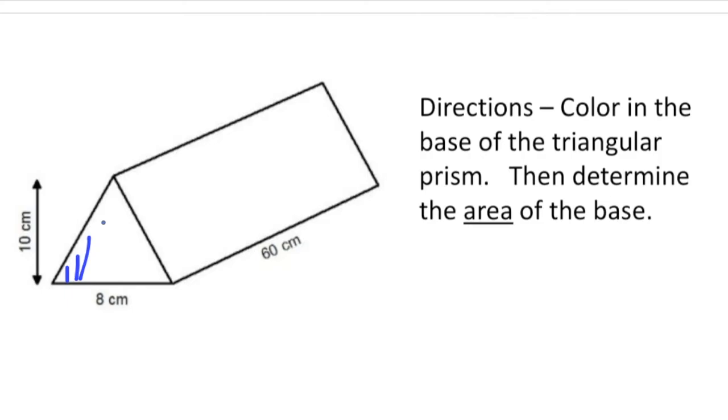Okay, so the reason why it's called a triangular prism is that the base is a triangle. All right, so this is the base that we need to find the area of.